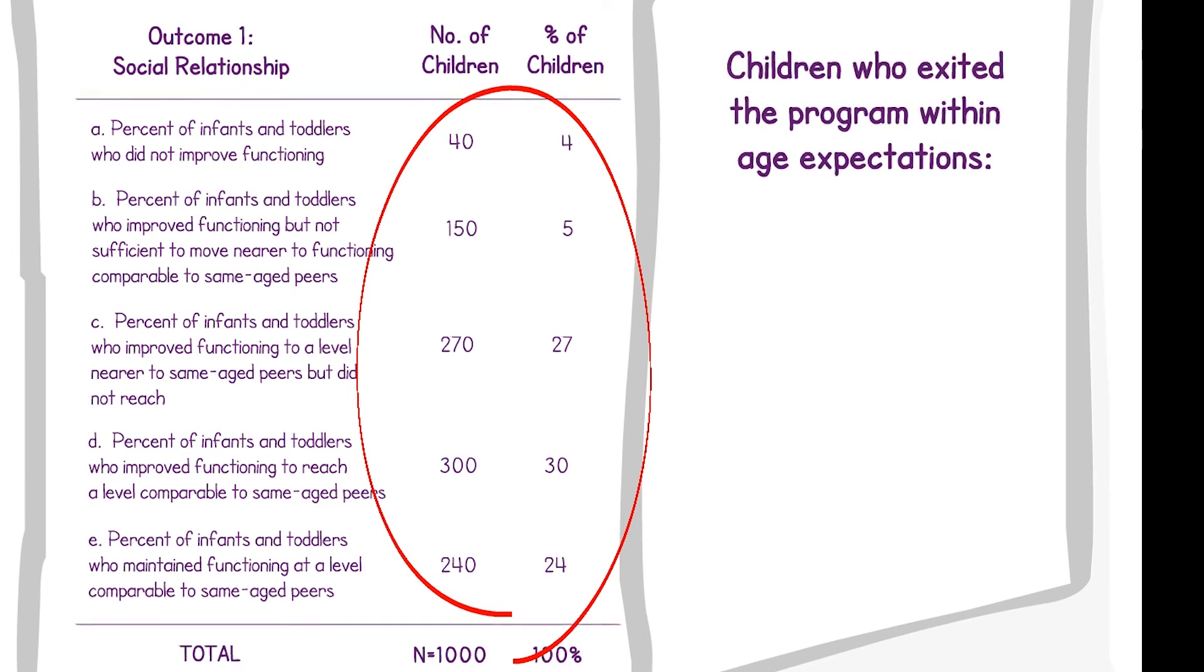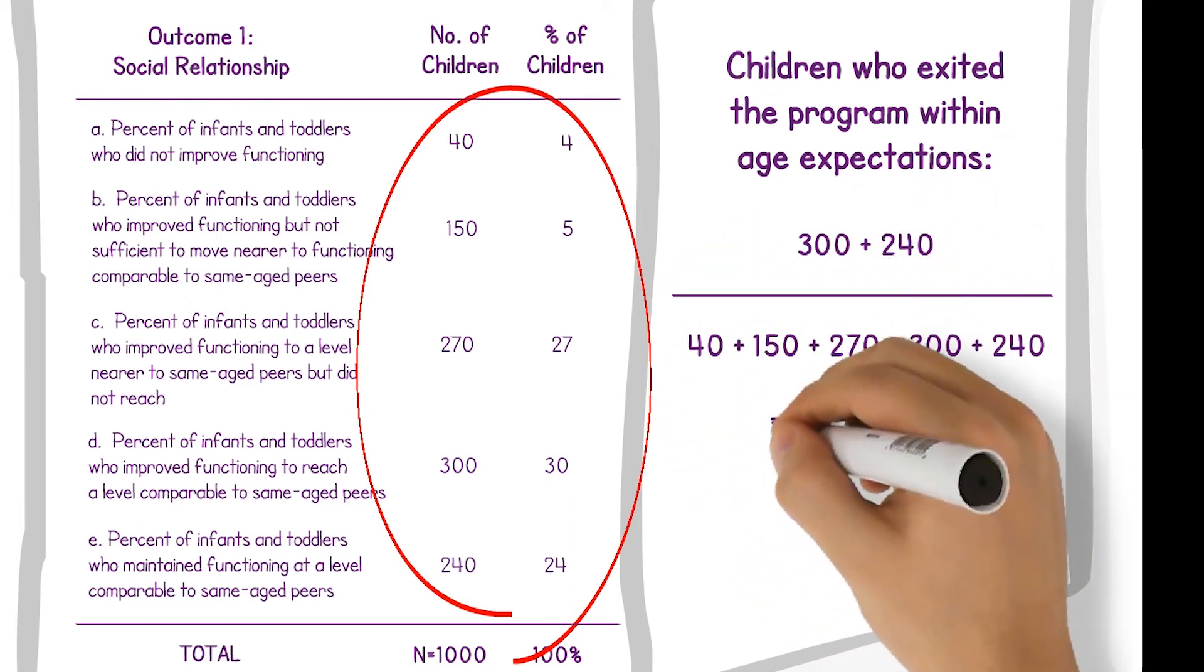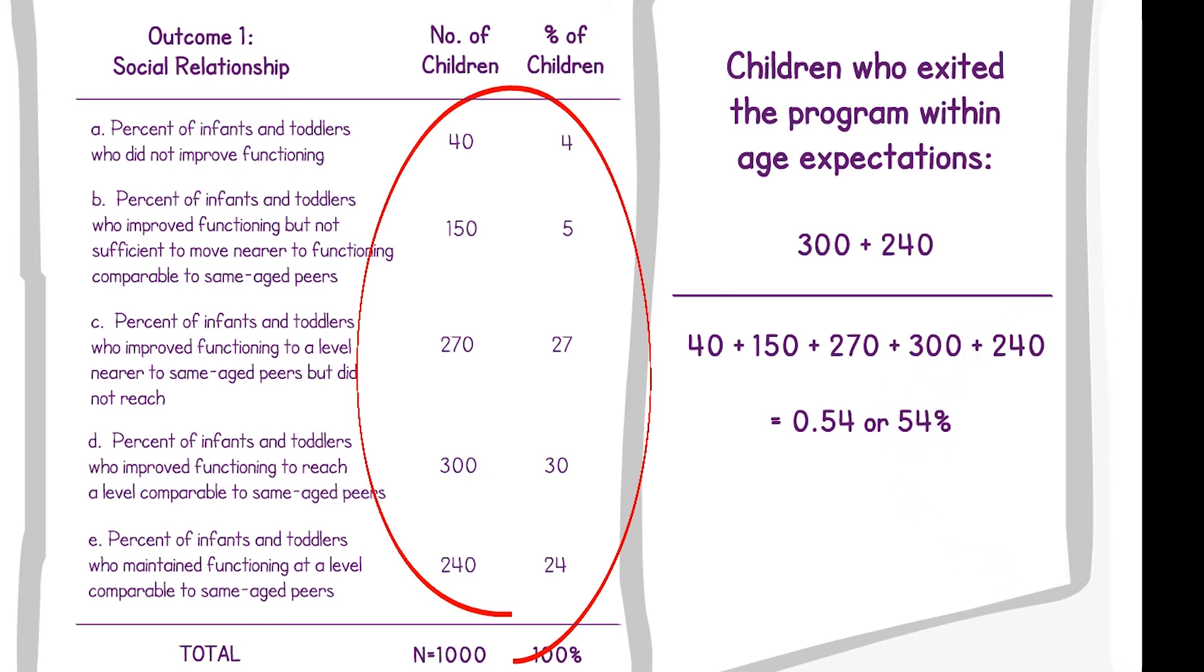For the same example, 54% of children who exited the program were functioning within age expectations in social relationships.